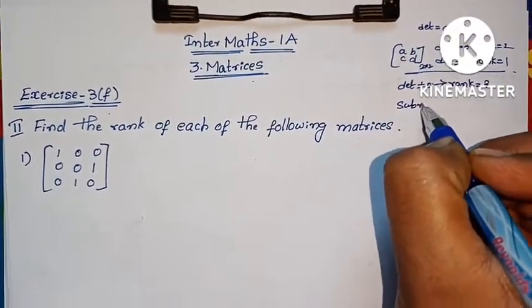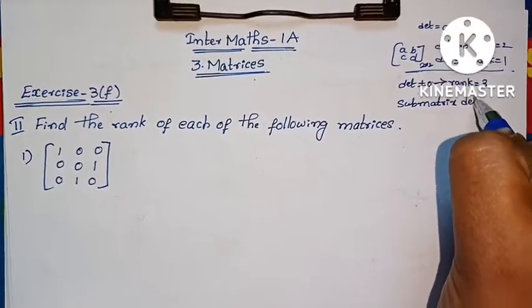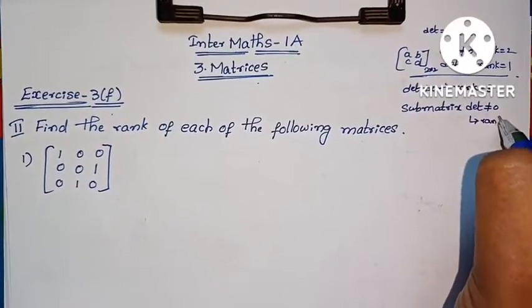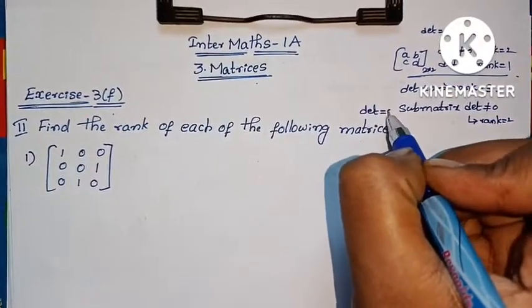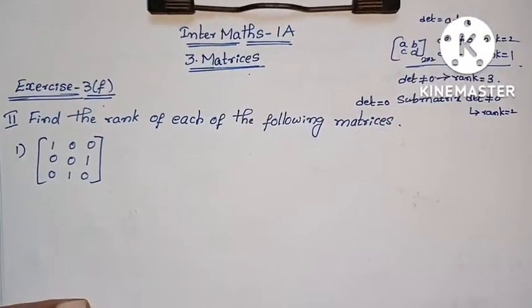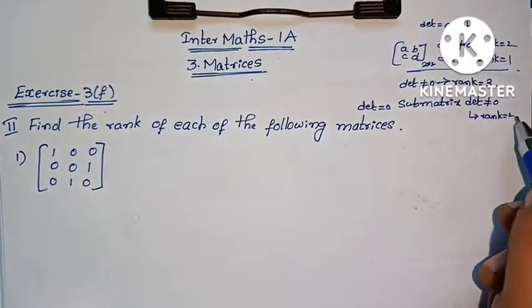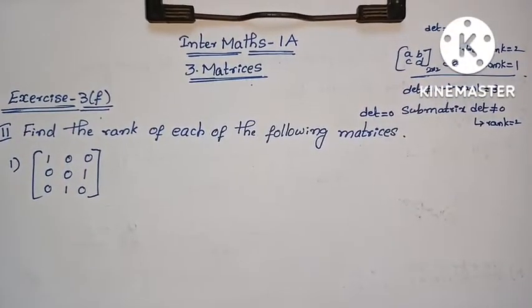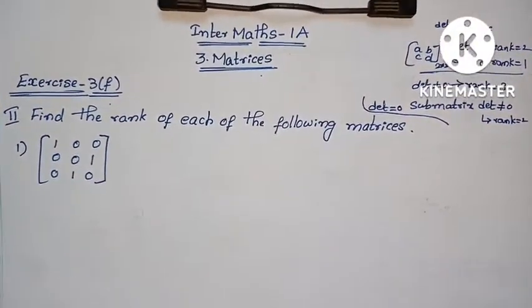If the determinant of the main matrix is not equal to 0, the rank is 3. If the determinant equals 0, we check the sub-matrix. If a sub-matrix determinant is not equal to 0, the rank is 2. If the sub-matrix determinant value is also 0, the rank is 1.